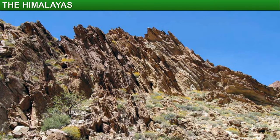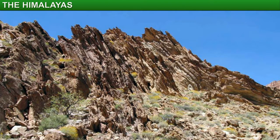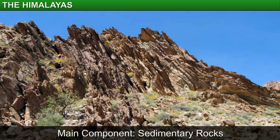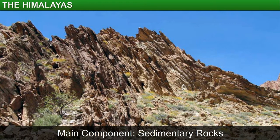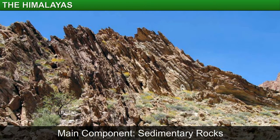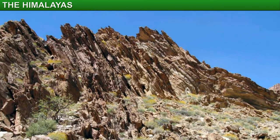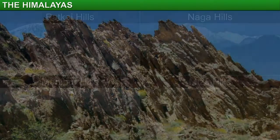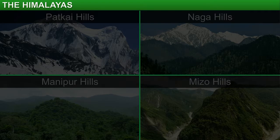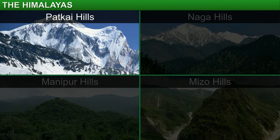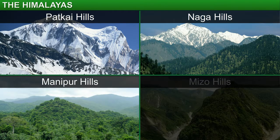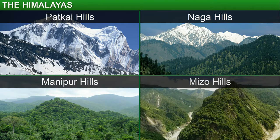The Purvanchal hills are covered by thick forests and mostly consist of parallel ranges and valleys. Strong sandstone, a type of sedimentary rock, is the main component of these mountains. The Purvanchal range is made up of the Patkai hills, the Naga hills, the Manipur hills and the Mizo hills.